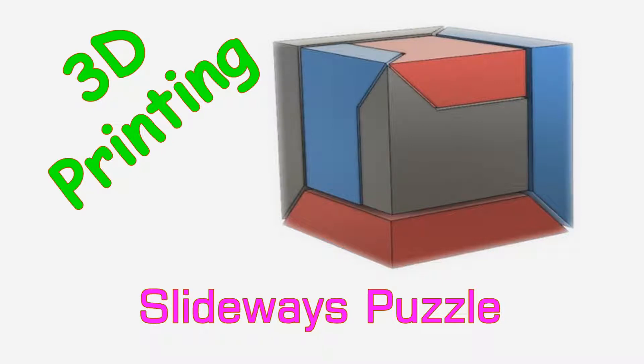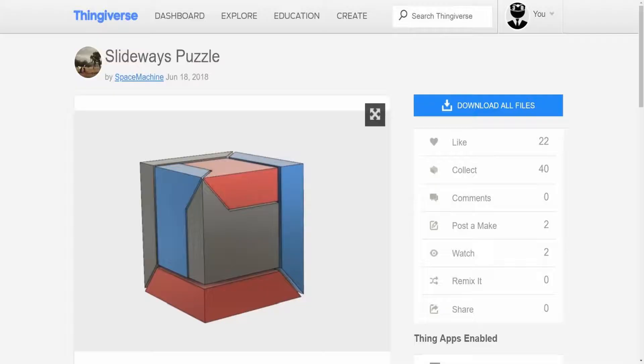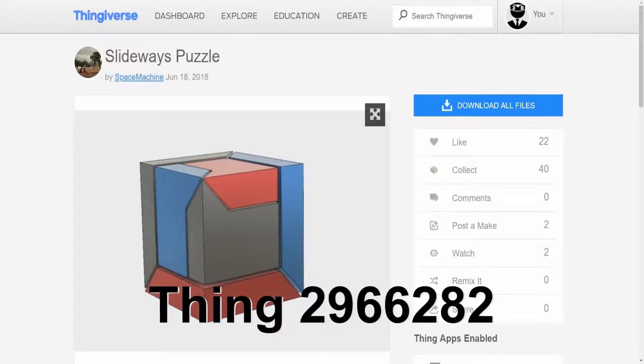It is a sideways puzzle by Space Machine. It's a simple three-piece puzzle that goes together to make a cube. The cool thing about this puzzle is all three parts are exactly the same. A link to this puzzle will be in the description.